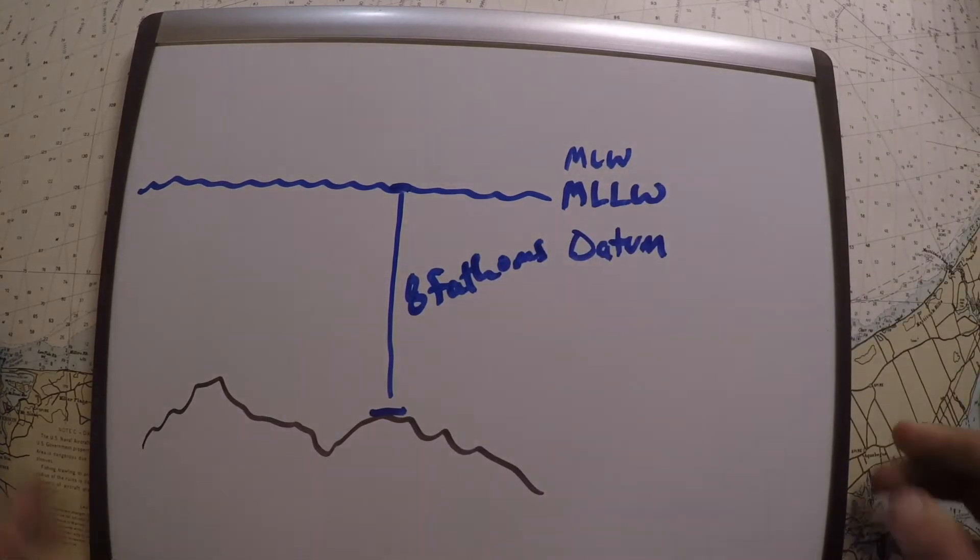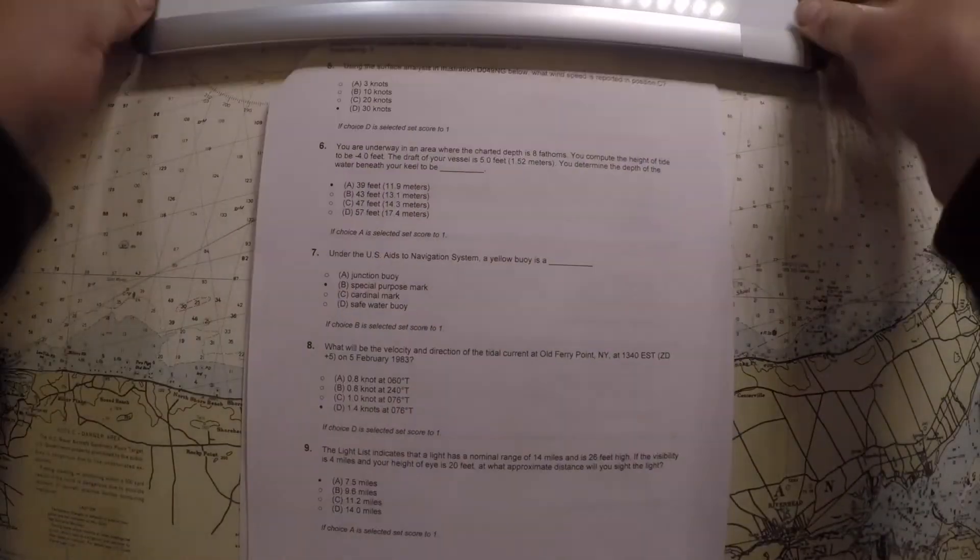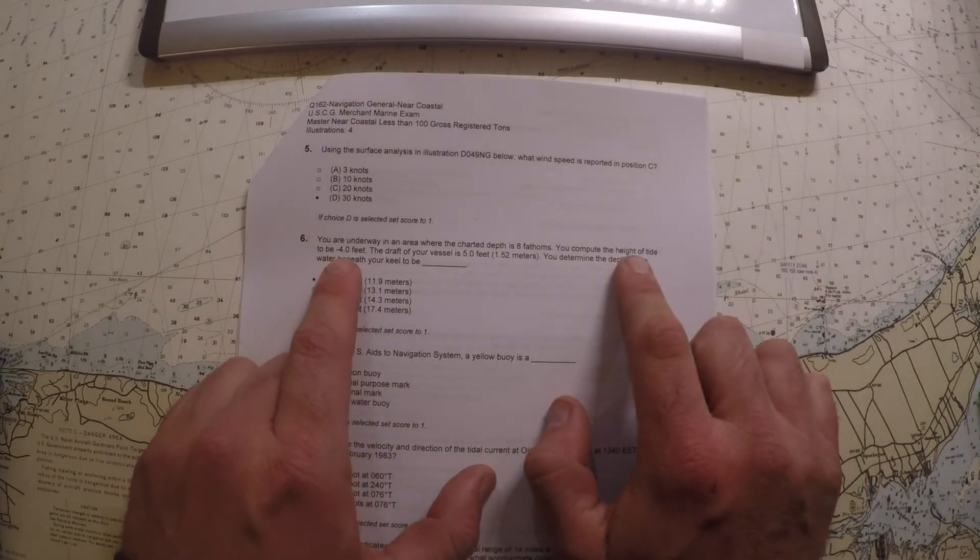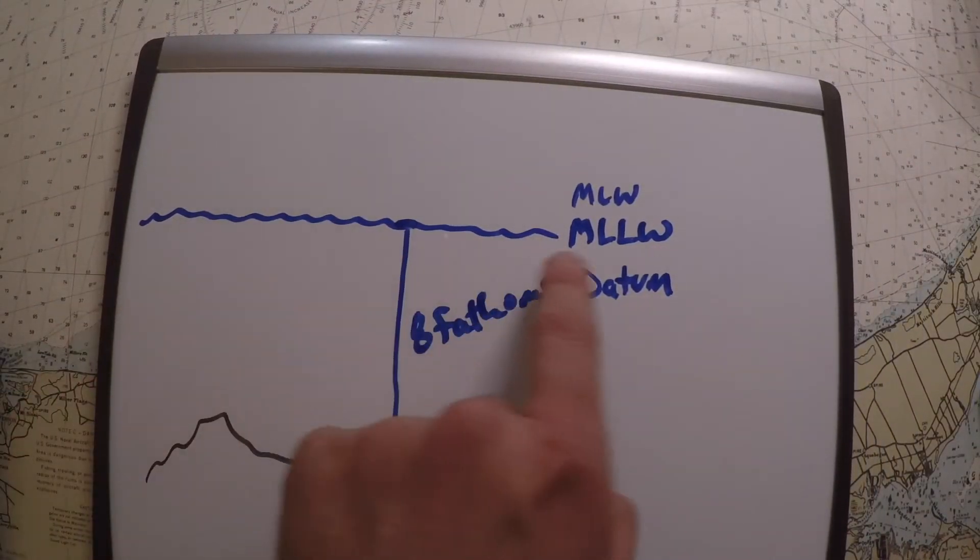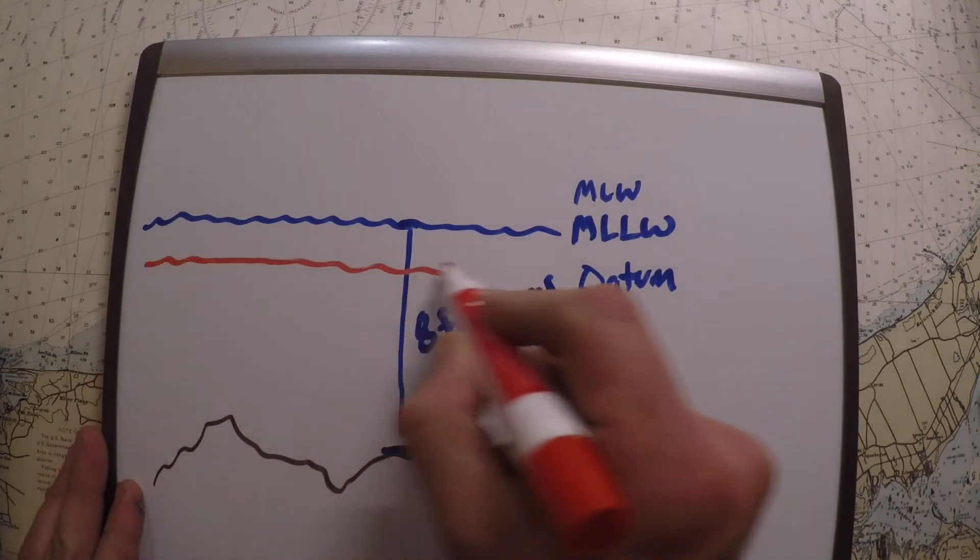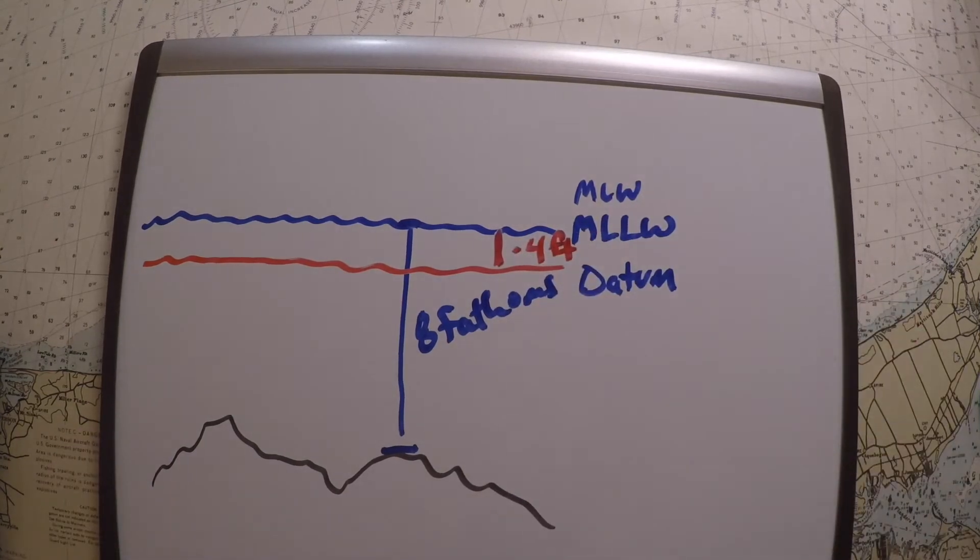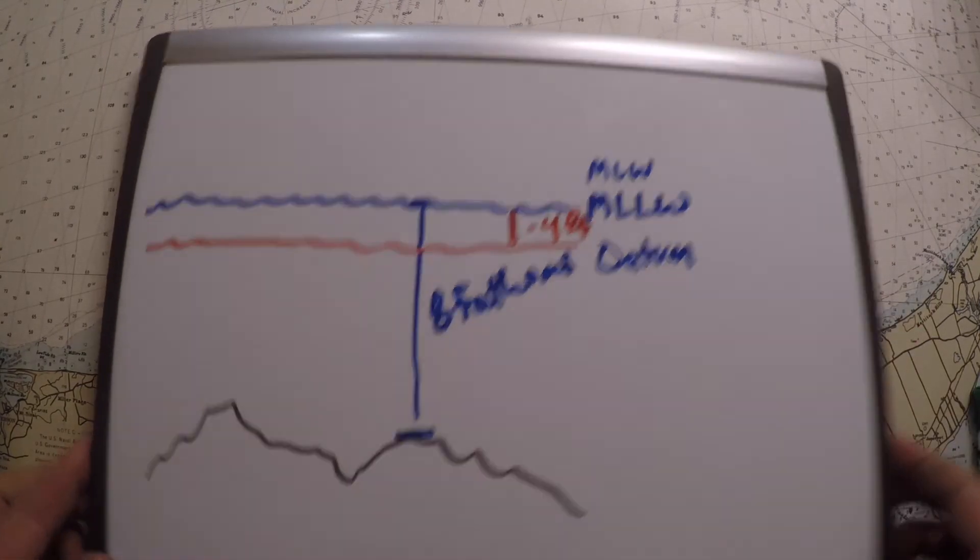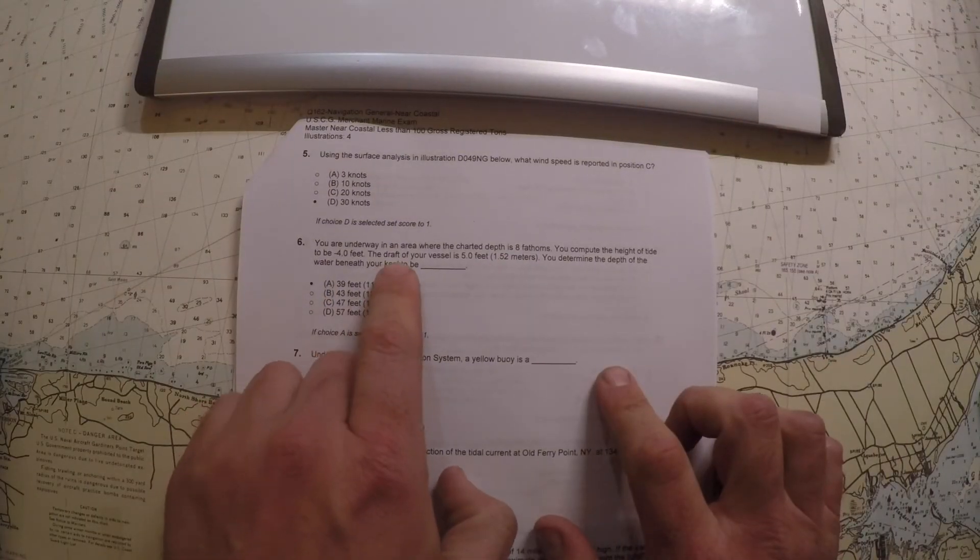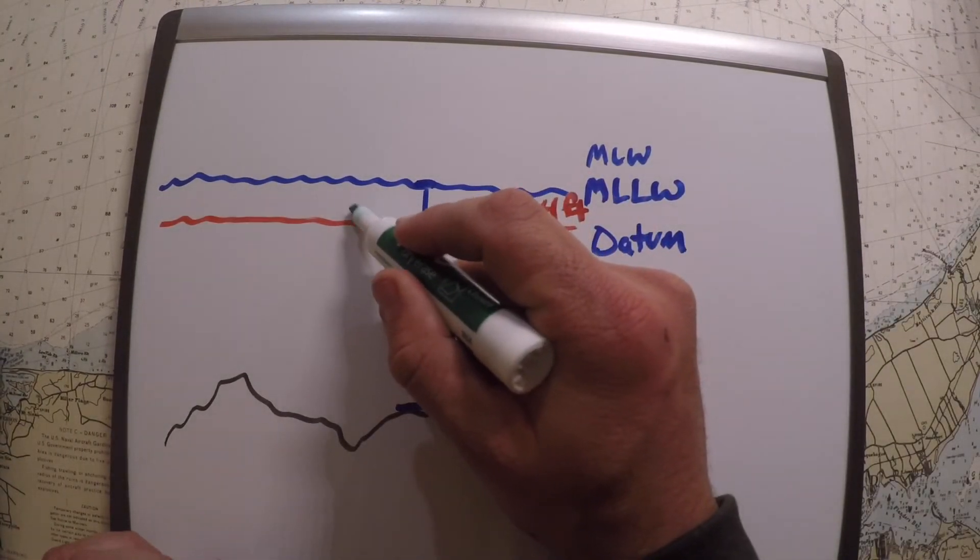That mean lower low water. And then it asks us to say that the height of the tide is negative 4 feet. So what they're saying is if you take the datum where the water normally is, at this time the tide is actually 4 feet below that. So it's like a negative tide, which is kind of rare but good to know. And then it also asks us that the draft of our vessel is 5 feet, and we want to know what the depth is beneath our keel. So our vessel, you know, is maybe floating on the surface here.